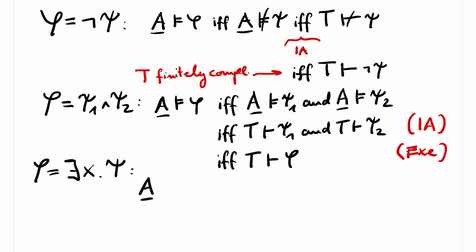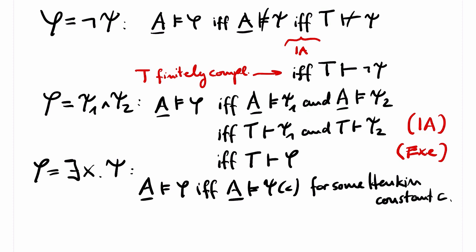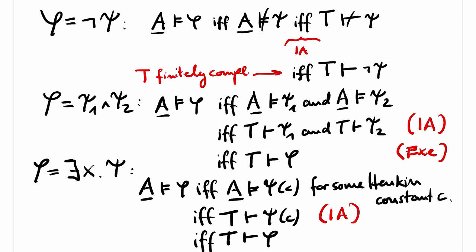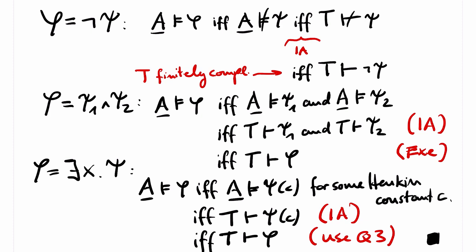If φ is of the form ∃x ψ, then A ⊨ φ if and only if A ⊨ ψ(c) for some Henkin constant c, by the construction of A. This is the case if and only if ψ(c) has a formal proof in T. Here we have to use axiom Q3 and some reasoning with formal proofs that I also leave to the reader. And this is the end of the proof. Interestingly, so far we have only used the axioms for equality, Q3, Q1, TAUT implicitly, and of course modus ponens, but not Q2, Q4, and Q5.